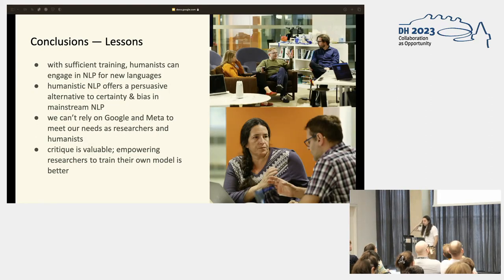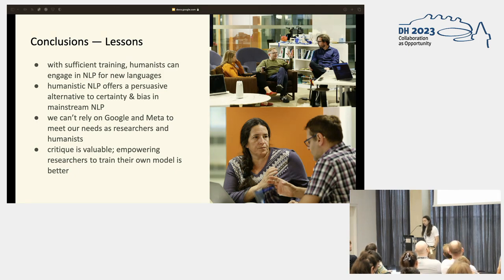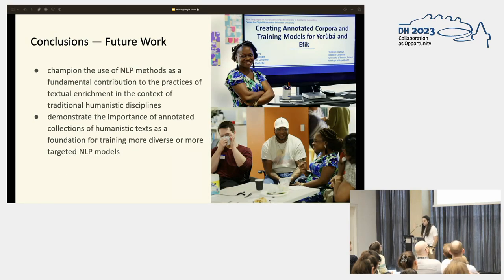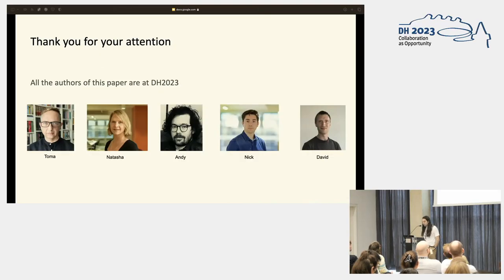Our conclusions: with sufficient training, humanists can engage in NLP for new languages. Our idea of humanistic NLP offers a persuasive alternative to conventions around certainty and bias in mainstream NLP. We know we can't rely on Google and Meta to meet our needs as researchers and humanists, so we opened up a space for people to take things into their own hands — because while critique of how those models don't meet our needs is valuable, empowering researchers to train their own models is always going to be better. We want to continue to champion NLP methods as a fundamental contribution to textual enrichment and demonstrate the importance of annotated humanistic text collections as a foundation for training more diverse, targeted NLP models.